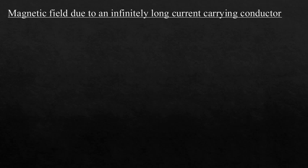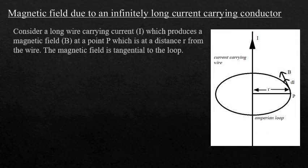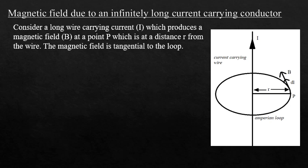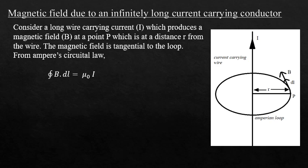Magnetic field due to an infinitely long current carrying conductor: Consider a long wire carrying current I which produces a magnetic field at point P. Consider an Amperian loop of radius R around the current carrying conductor, such that the distance from the wire to point P is R. The magnetic field B and the current element dL are tangential to the loop. From Ampere's Circuital Law, the line integral of B dot dL is equal to µ0 times the total current I.